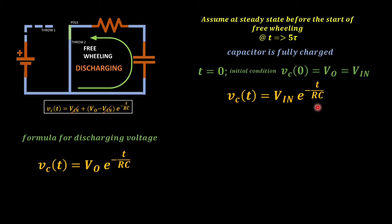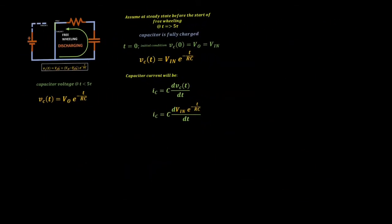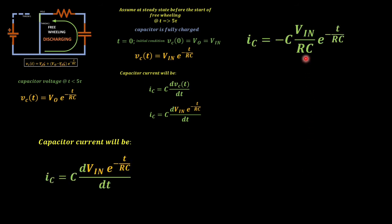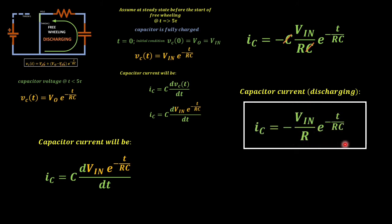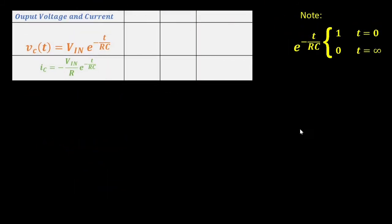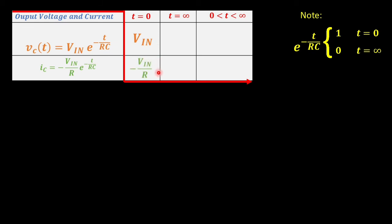For the current, we will take again the derivative of the voltage by using the formula for capacitor current IC equal to C dV/dT. The resulting equation will be IC equal to negative V in all over R multiplied with E raised to the negative T all over RC. At time equal to zero, the voltage across the capacitor is equal to the input voltage, and the current is equivalent to negative V in all over R. At time equal to infinity, the exponential term is equal to zero, therefore both voltage and current are now zero. At time greater than zero but less than infinity, both voltage and current will decay exponentially by a factor of E raised to negative T all over RC.